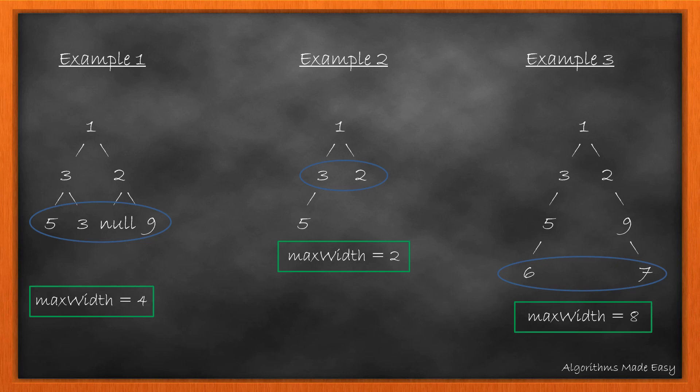For example 1, the max width is four. This is because we need to take into account the null nodes present in between the non-null nodes. For example 2, we can see that the width is larger in the second last level and so the program returns it. For example 3, we will again take into consideration the null nodes. That makes the width as 8.